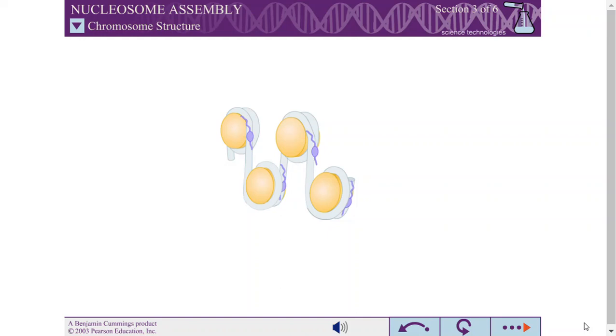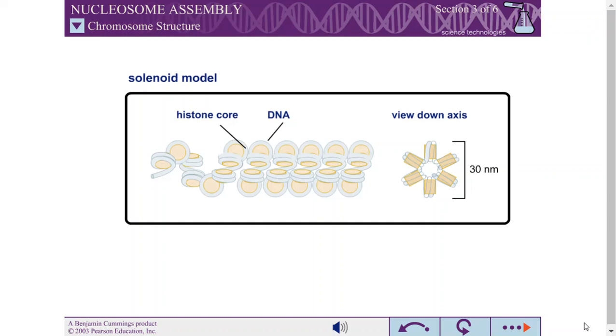In the solenoid model, the nucleosome disks are stacked on top of each other, forming a helix. The linker DNA is hidden on the inside of this helical structure.